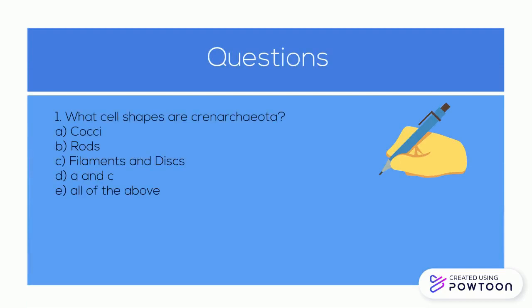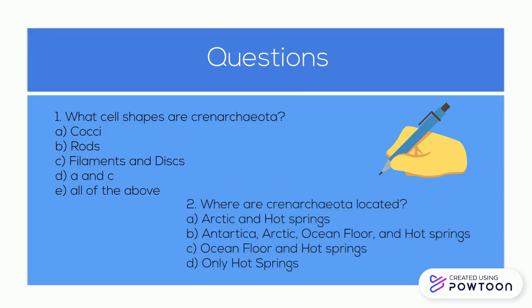For my questions: firstly, what cell shapes are Crenarchaeota? Are they cocci, rods, filaments and discs, A and C, or all of the above? The second question is, where are Crenarchaeota located? Arctic and hot springs, Antarctica, Arctic ocean floor and hot springs, ocean floor and hot springs, or only in hot springs? The answer to number one is all of the above, and the answer to number two is Antarctica, Arctic, ocean floor, and hot springs.